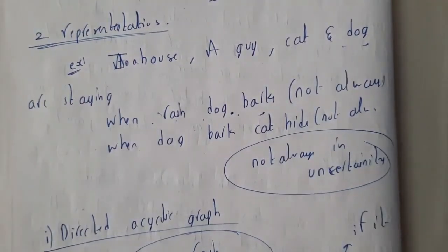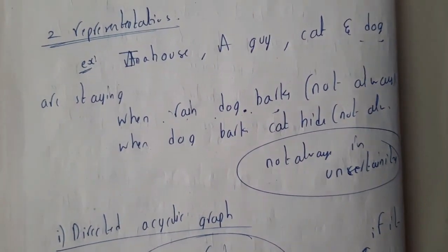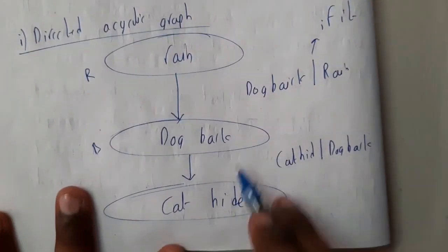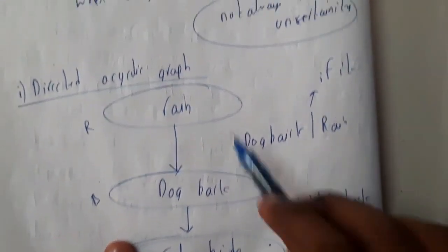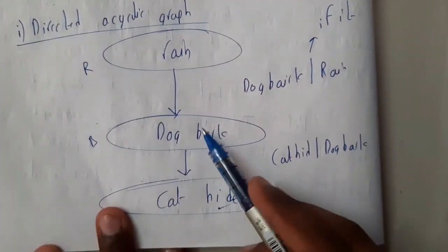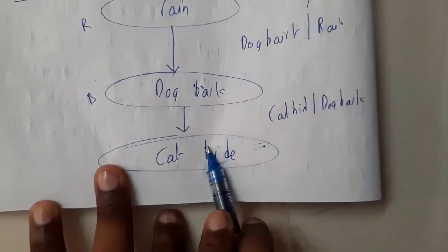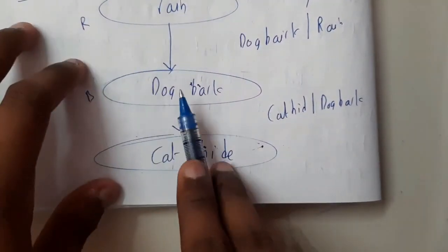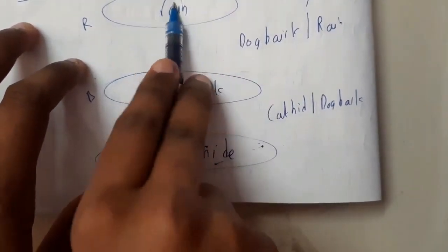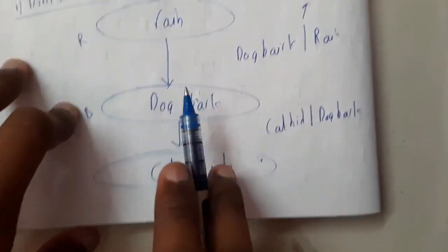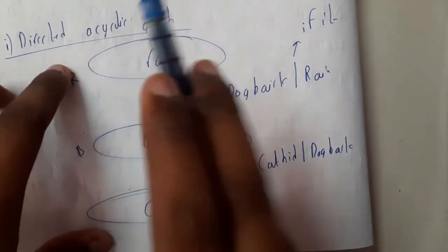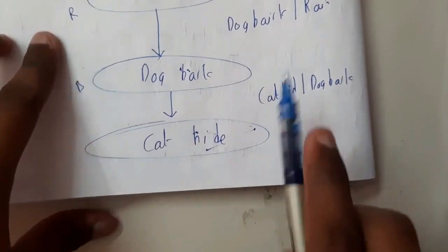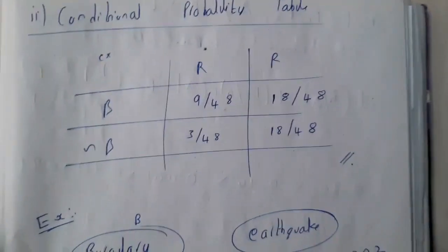The directed acyclic graph is: rain, dog barks, and cat hides. If it rains, the dog may bark. If the dog barks, the cat may hide. These are conditional probabilities. If rain happens, then this will happen. If rain is the condition, it will be in the denominator: dog barks given rain, cat hides given dog barks.